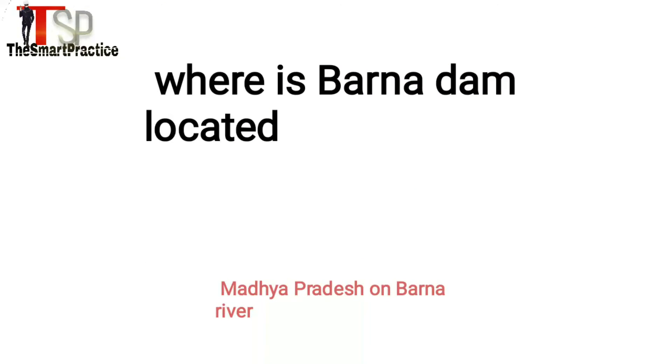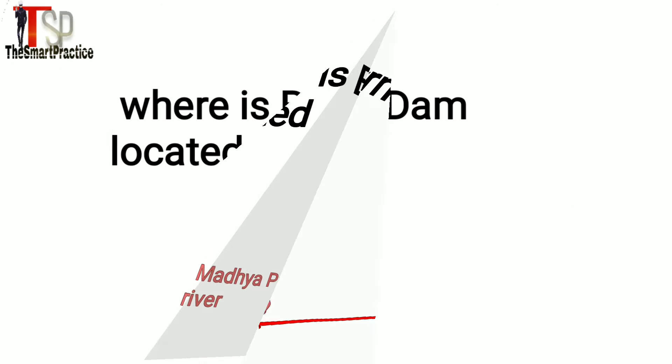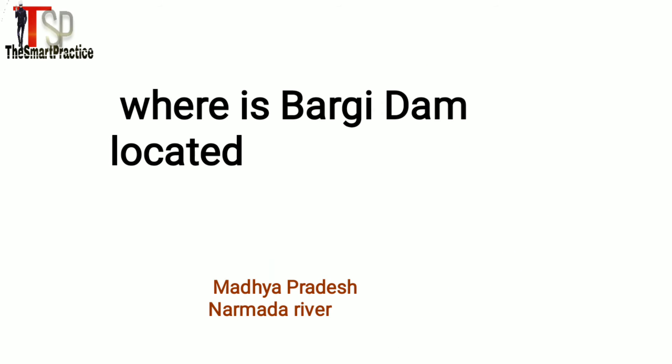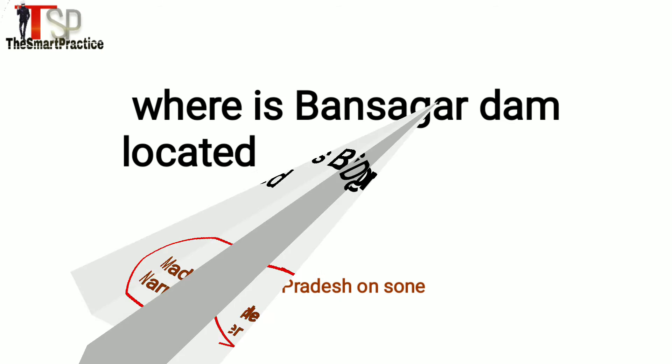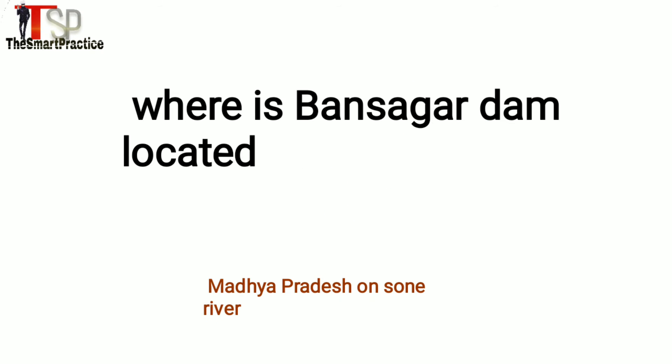Where is Varna Dam located? Madhya Pradesh, on Varna river. Where is Vargi Dam located? Madhya Pradesh, on Narmada river. Where is Bansagar Dam located? Madhya Pradesh, on Son river.